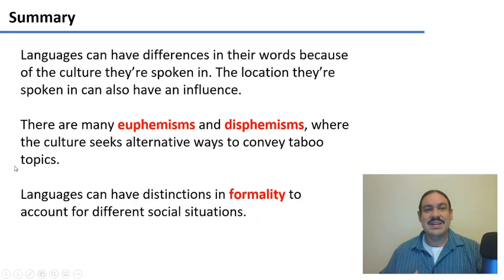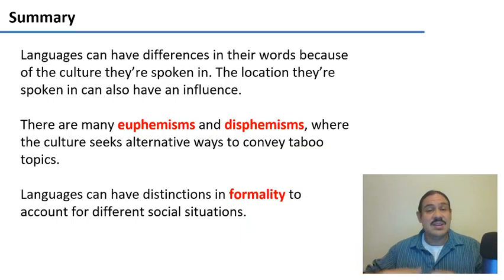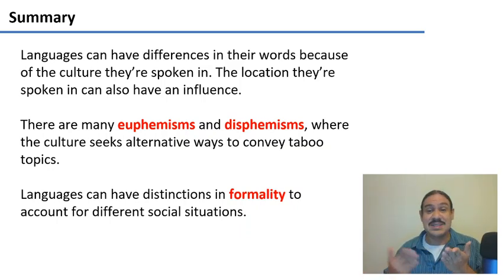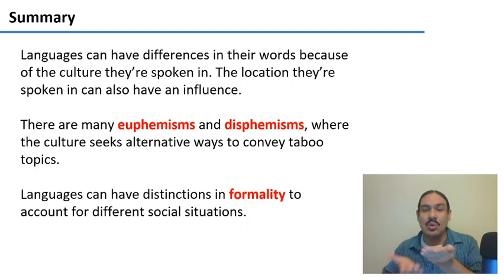In summary, languages don't have the same words because their cultures need different concepts, and new words are invented for those concepts. The environment can also play a role, since you'll need words to describe it. Some concepts can be taboo, so you need euphemisms and dysphemisms to get around them. And society may demand divisions in formality when treating people, so you get words and structures to reflect that.